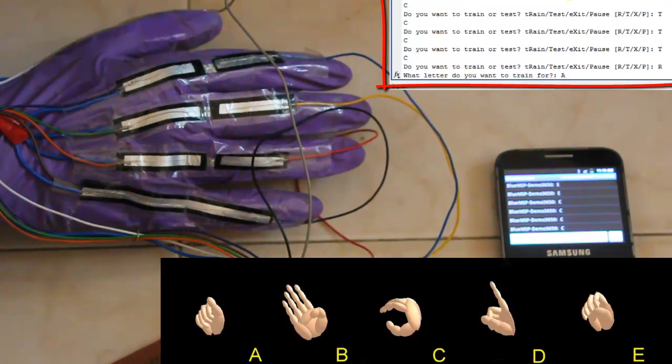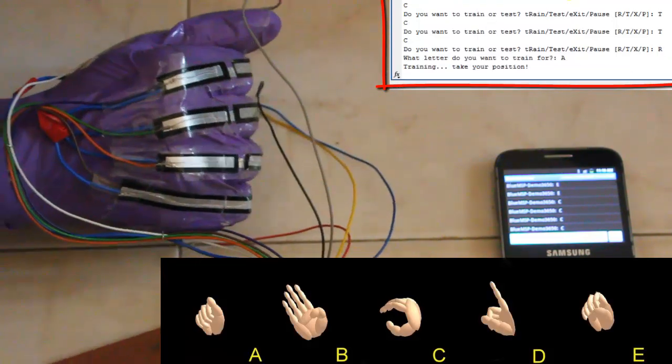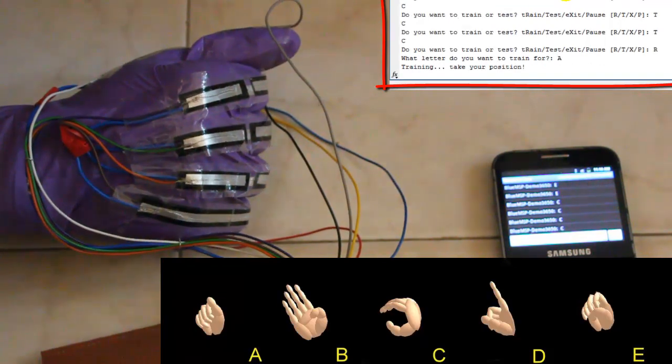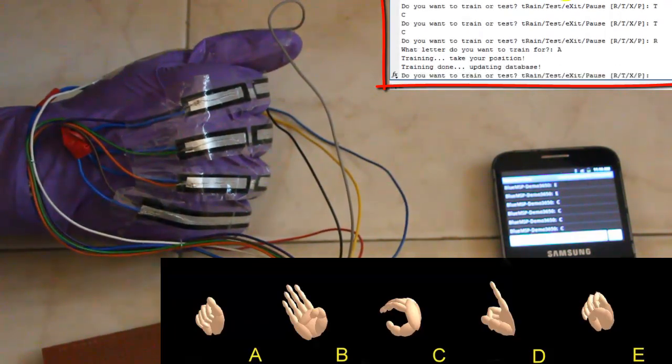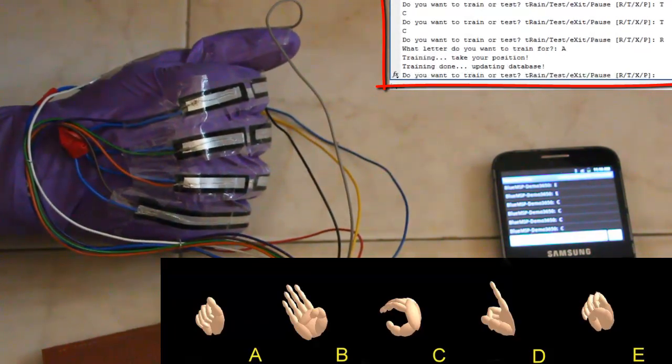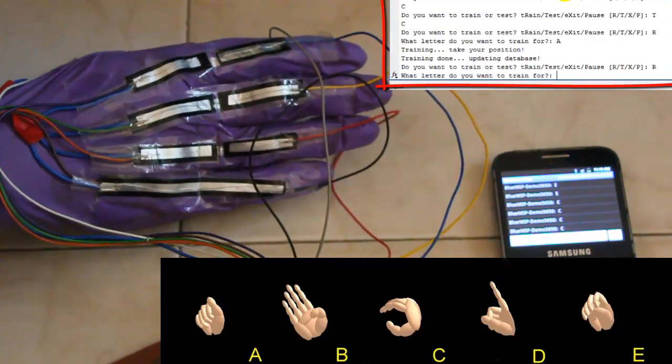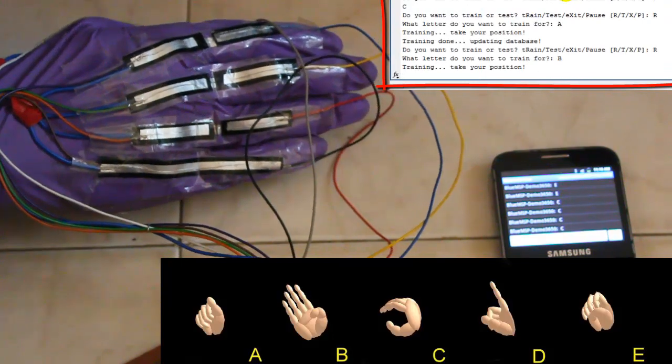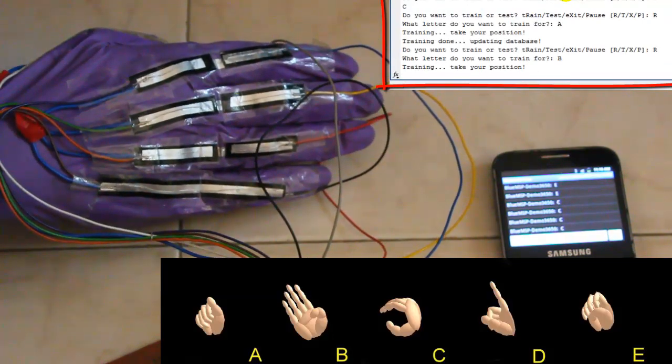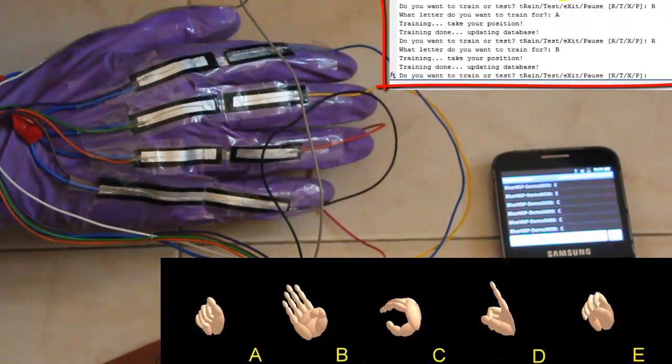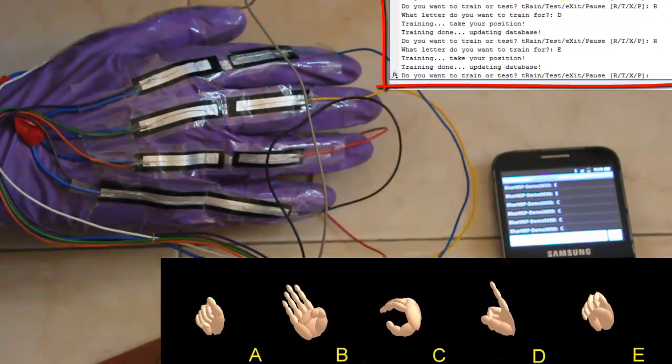We will begin the training for A. The training for A is complete. Now we will do the same for B. The training for B is done. We similarly trained for all the other alphabets from A to E.